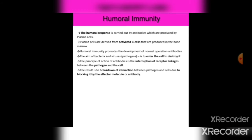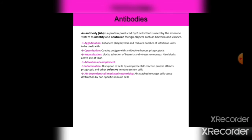An antibody is a protein produced by B cells that is used by the immune system to identify and neutralize foreign objects such as bacteria and viruses, preventing disease. Functions include: agglutination, which enhances phagocytosis and reduces the number of infectious units; opsonization, which is the coating of antigens with antibody to enhance phagocytosis; and neutralization, which blocks the adhesion of bacteria and viruses to mucosa and also blocks active sites of toxins.